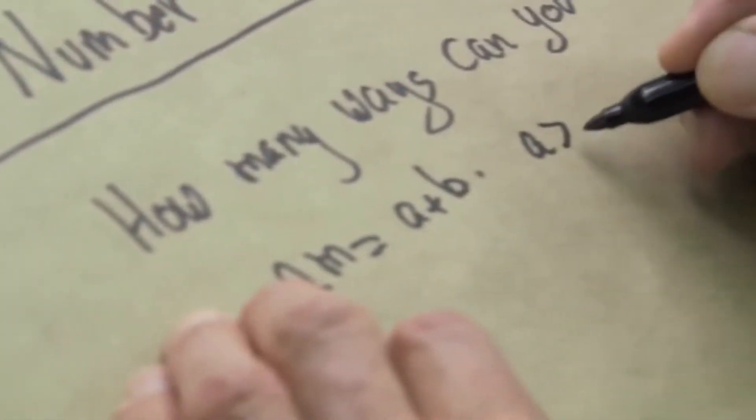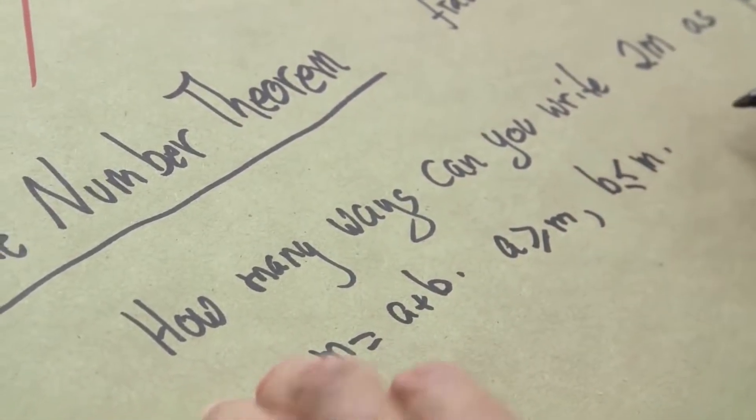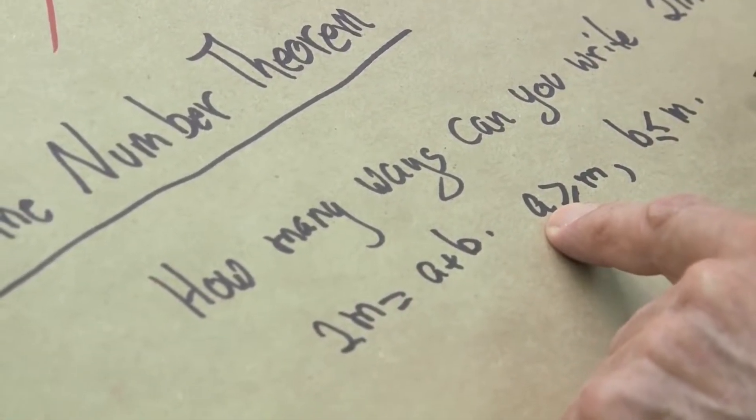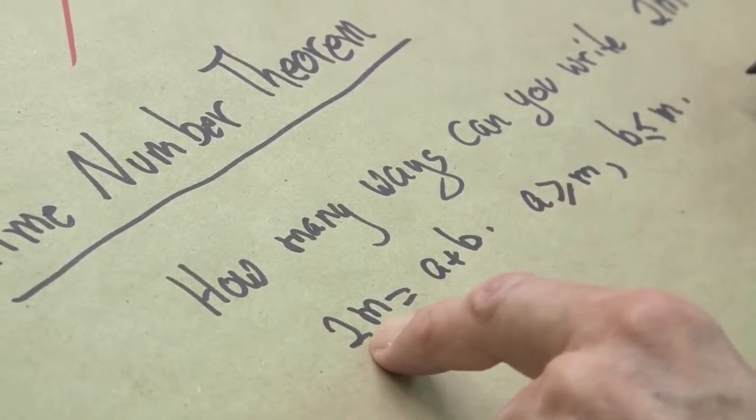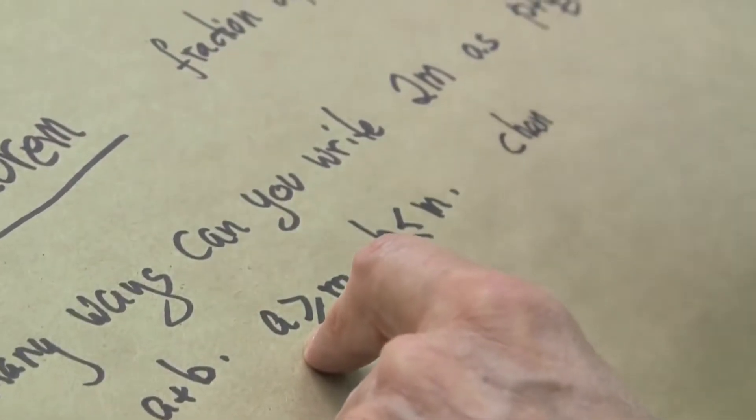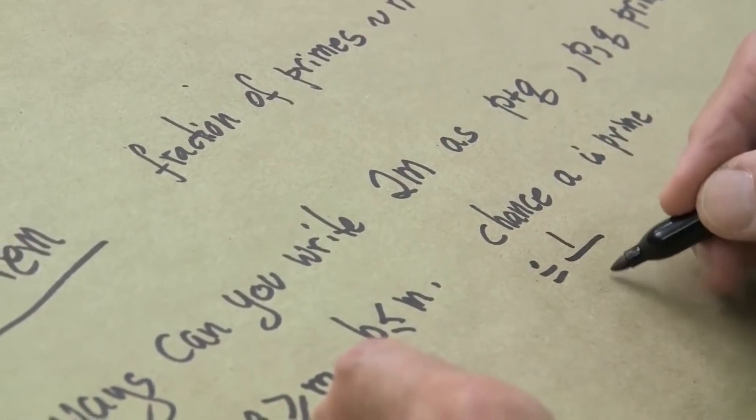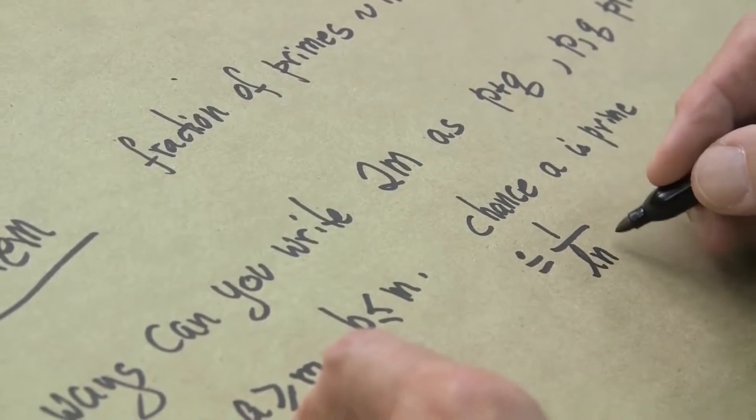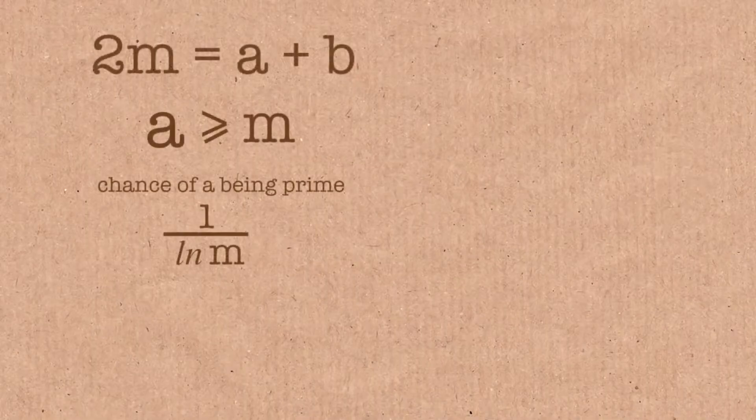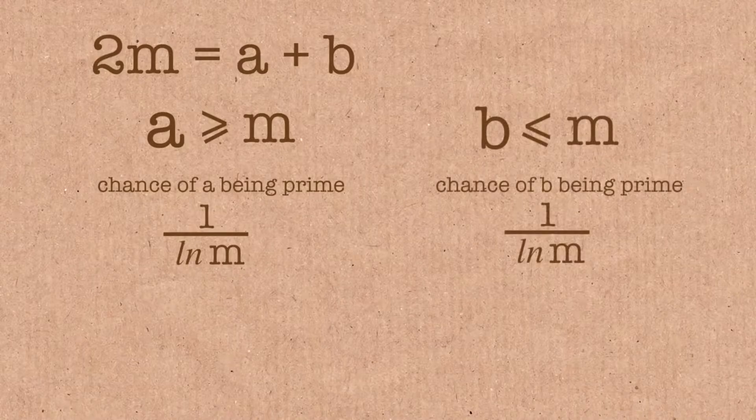So if I write 2m as a plus b, where a is bigger than or equal to m and b is less than or equal to m, then the chance of a being prime is about 1 over the log of m. So the probability that a will just by accident be prime is about equal to 1 over the log of m. And that's the same for the chance of b being prime, it's about 1 over the log of m.